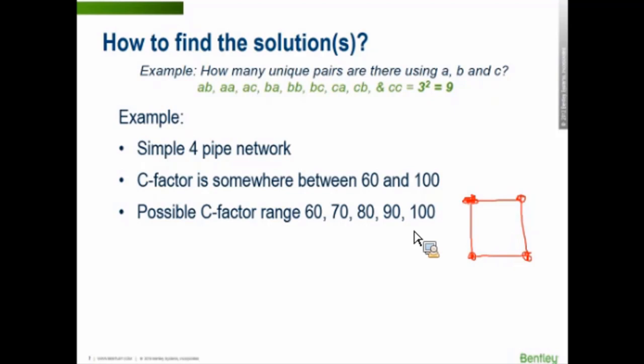That means we need to swap out the C factors. This one, first pipe here could be 60, this one could be 70, this one could be 80, this one could be 60. So that's one round, one version of the combinations. But then we have to keep going through and trying different ones. So this means that we need to check ultimately 624 different solutions just to be sure we have the right answer and test all those.